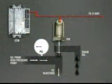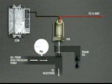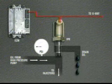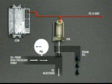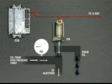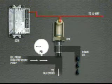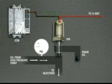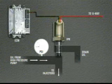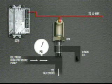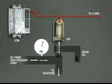The ECM monitors the injection control pressure sensor signal to verify the correct operation of the injection pressure regulator. As demand for injection control pressure, or ICP, increases, the ECM increases the signal duty cycle to the IPR solenoid, trapping more oil in the system and increasing injection control pressure.